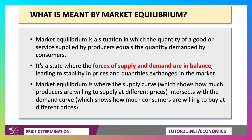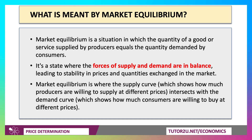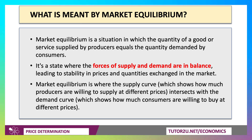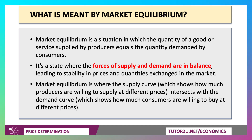Now, market equilibrium to an economist is a situation where the quantity of a good or service supplied by producers is in balance with the quantity demanded by consumers. Typically, when that state is reached, you get a relatively stable price and quantity exchanged in the market. The market clears at that point. So market equilibrium is where the supply curve, which shows how much producers in the market are willing and able to sell at different prices, intersects with the demand curve, which shows how much consumers are willing and able to buy at different prices.